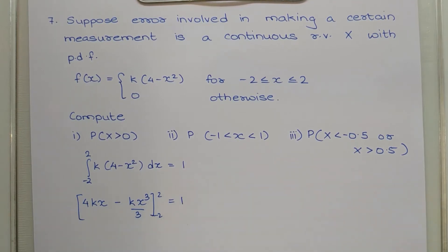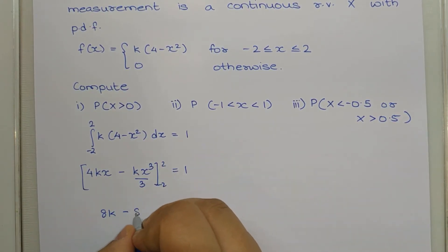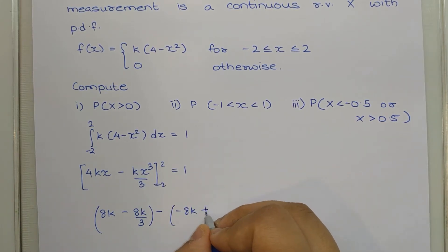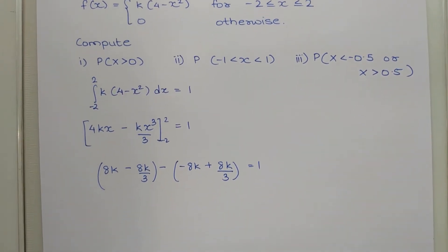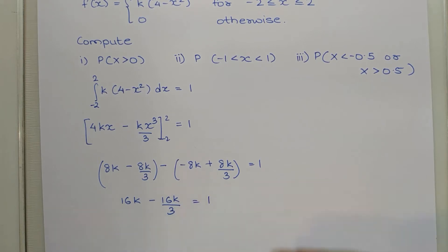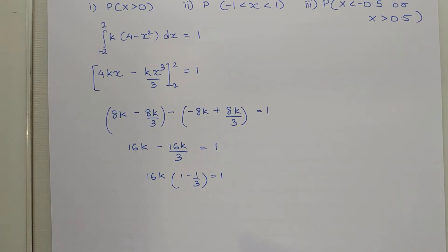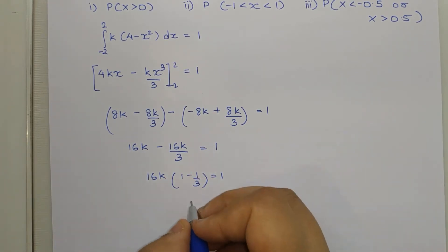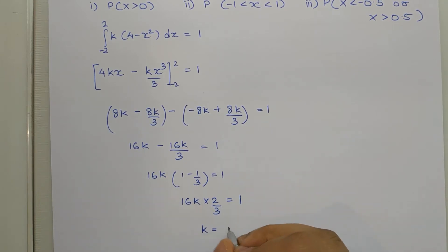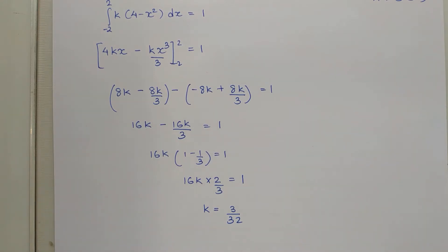Integrating: 4kx - kx³/3 from -2 to 2 = 1. Substituting gives 8k - 8k/3 - (-8k + 8k/3) = 1, which simplifies to 16k - 16k/3 = 1. Taking 16k common: 16k(1 - 1/3) = 16k · 2/3 = 1. Therefore k = 3/32.